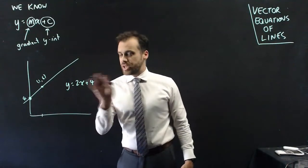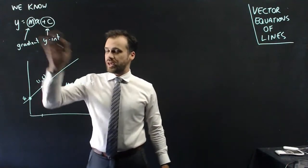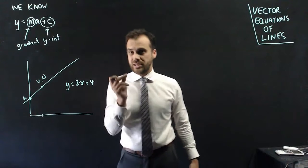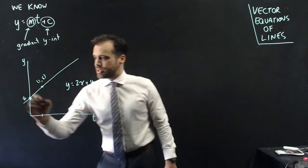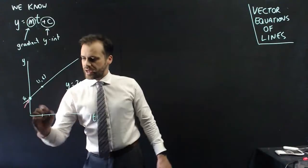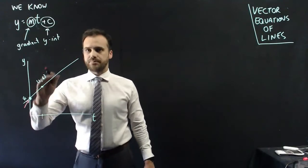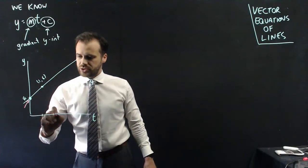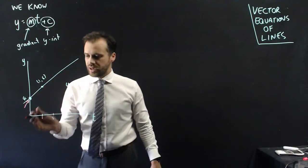Let's change this slightly — instead of having x, let's have t. Now we can imagine this is our starting position, and at time 1 it's up 2, and at time 2 it's up another 2 to 8, and so on.